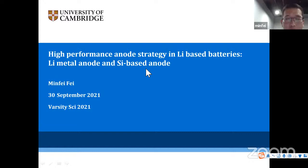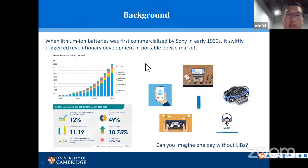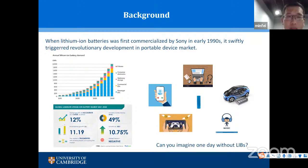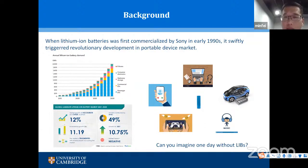Today's presentation focuses on anode design in lithium-based batteries. The lithium-ion battery has a history of slightly less than three decades. It was partly introduced by Professor John Goodenough, the 2019 Chemistry Nobel Prize winner, and was first commercialized in the early 1990s.